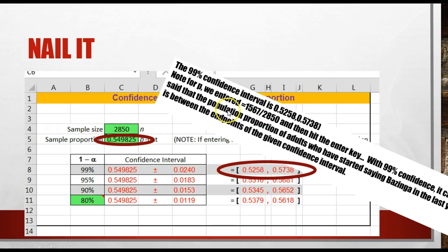But note for P, we entered equals 1567 divided by 2850. And we didn't have to enter the P. If they give us the P, we'll enter it. But we had a fractional proportion there, so I just say equals that.